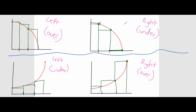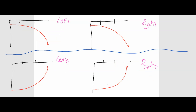Now, all of these functions we looked at were above the x-axis. So it would be good to see if this holds true when the functions are below the x-axis. I'm going to pause the video and sketch some new functions for us, then we'll do the same activity. I have, again, a decreasing function on top and an increasing function on the bottom. Pause the video and see if you can sketch in the correct left and right Riemann sums, and see if that conclusion holds — that for increasing functions the left Riemann sum was an under-approximation, and for a decreasing function it was an over-approximation.